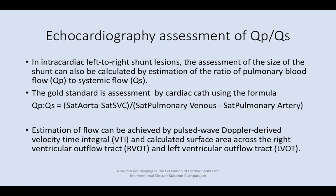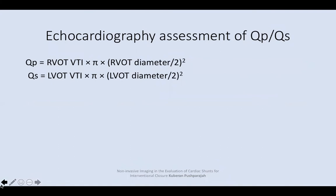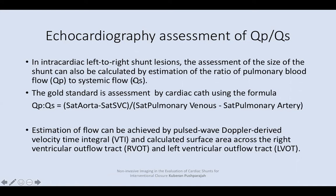Hi. Today, we'll speak about echocardiography assessment of Qp/Qs. In intracardiac left-to-right shunt lesions, the assessment of the size of the shunt can be calculated by estimation of the ratio of pulmonary blood flow Qp to systemic flow Qs.